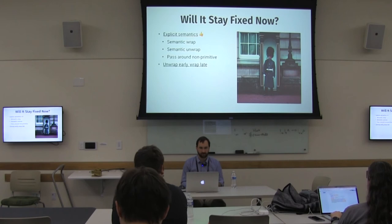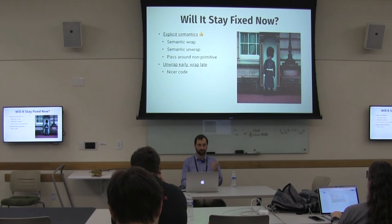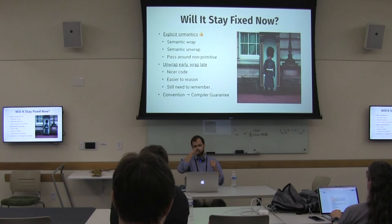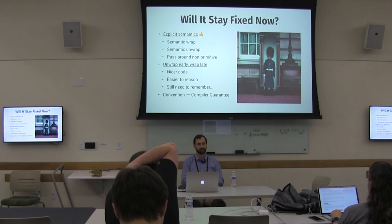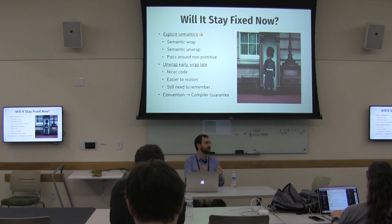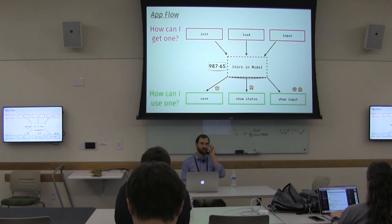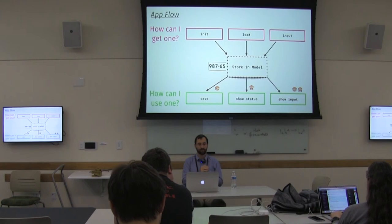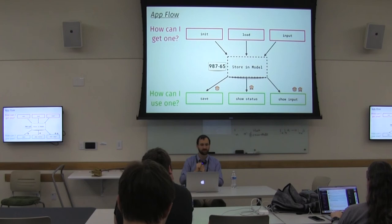What about unwrap early and wrap late — are we done? The code is nicer and easier to reason about, but we still need to remember to do it. Can we take what we've done — following a set of rules that served us well — and turn those rules, which are just a convention, into a compiler guarantee? We want to take this application flow and rather than just having helper functions to wrap and unwrap, move this into a module that enforces those guarantees — so the only way to get an SSNInput is through this module, and the only way to use one is through this module.